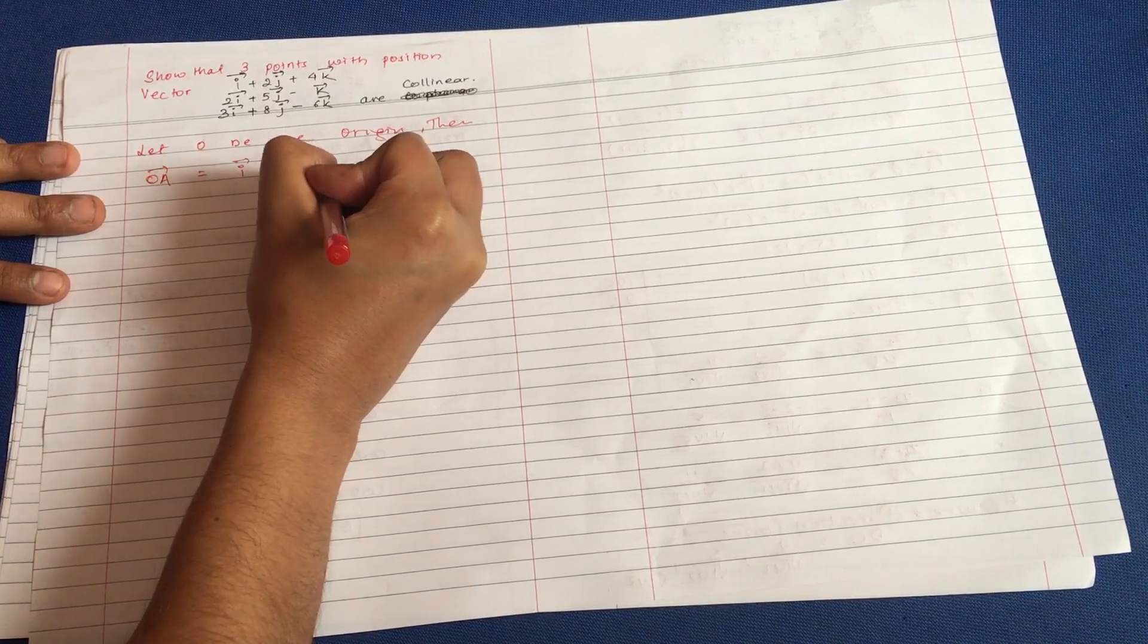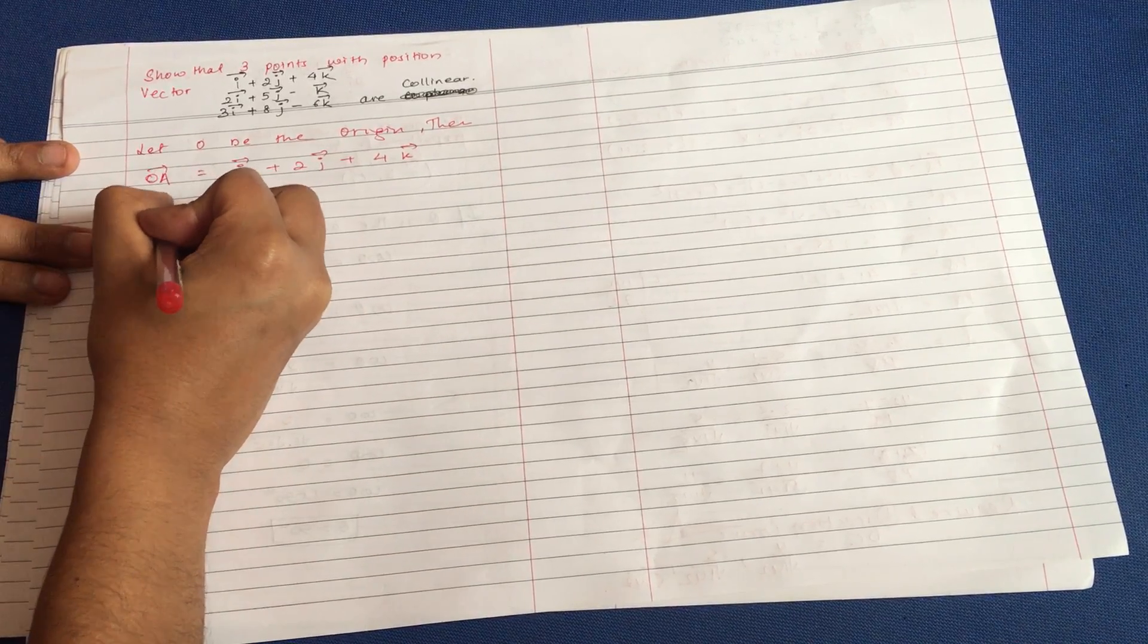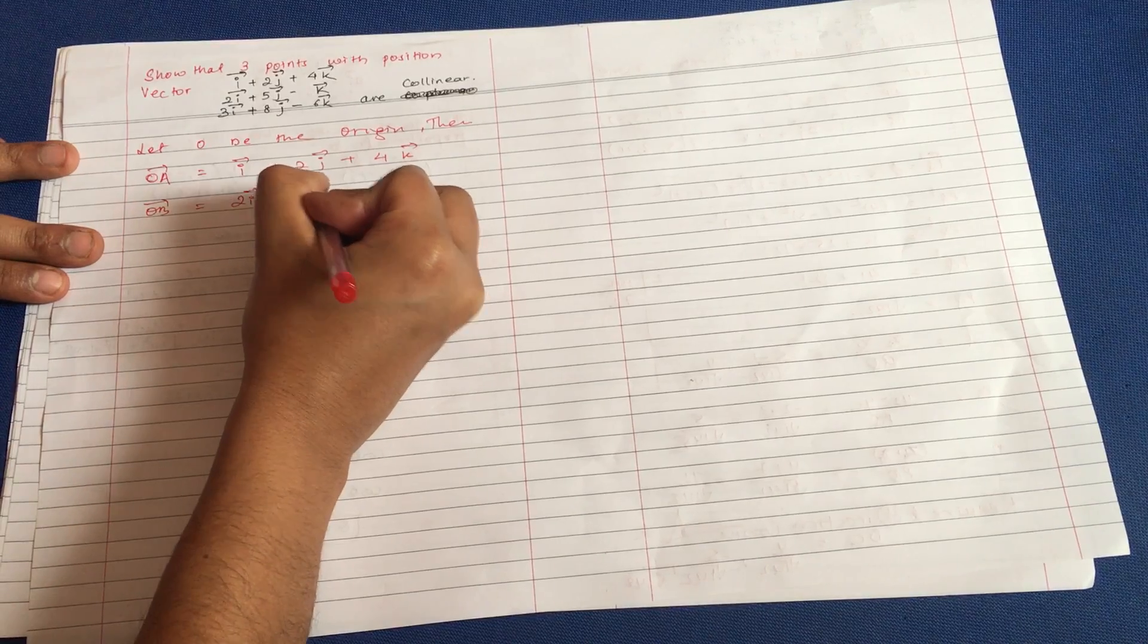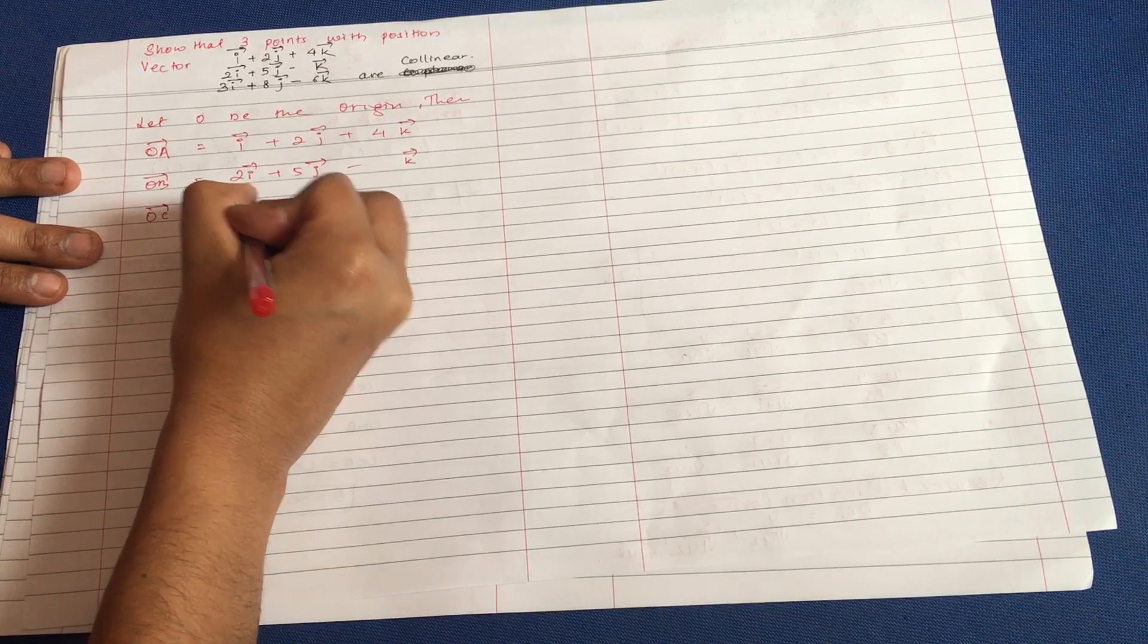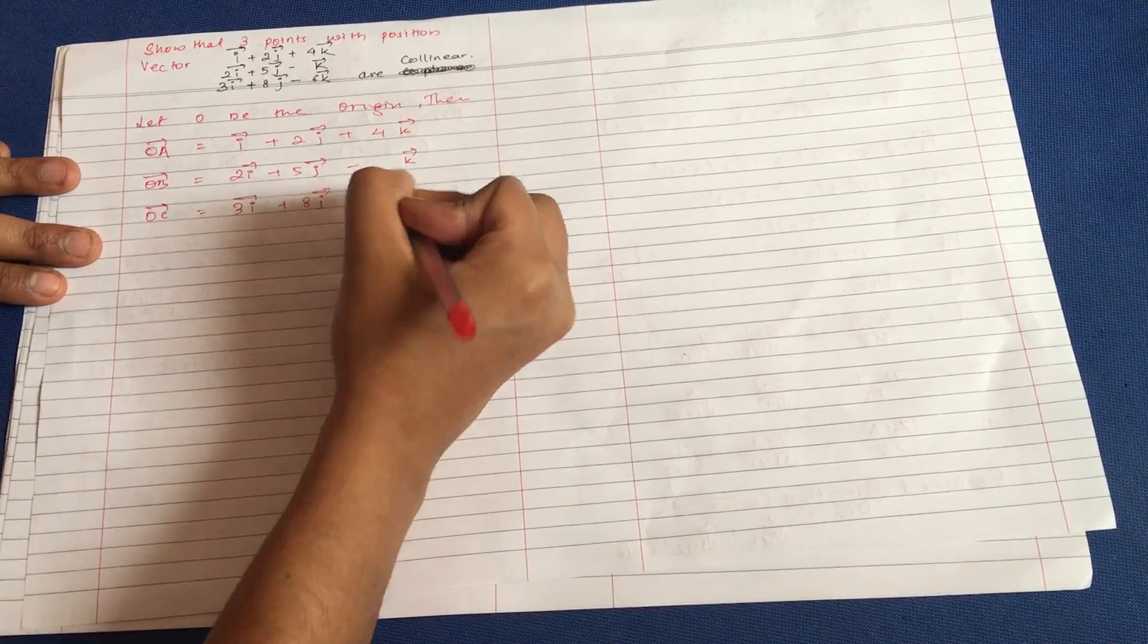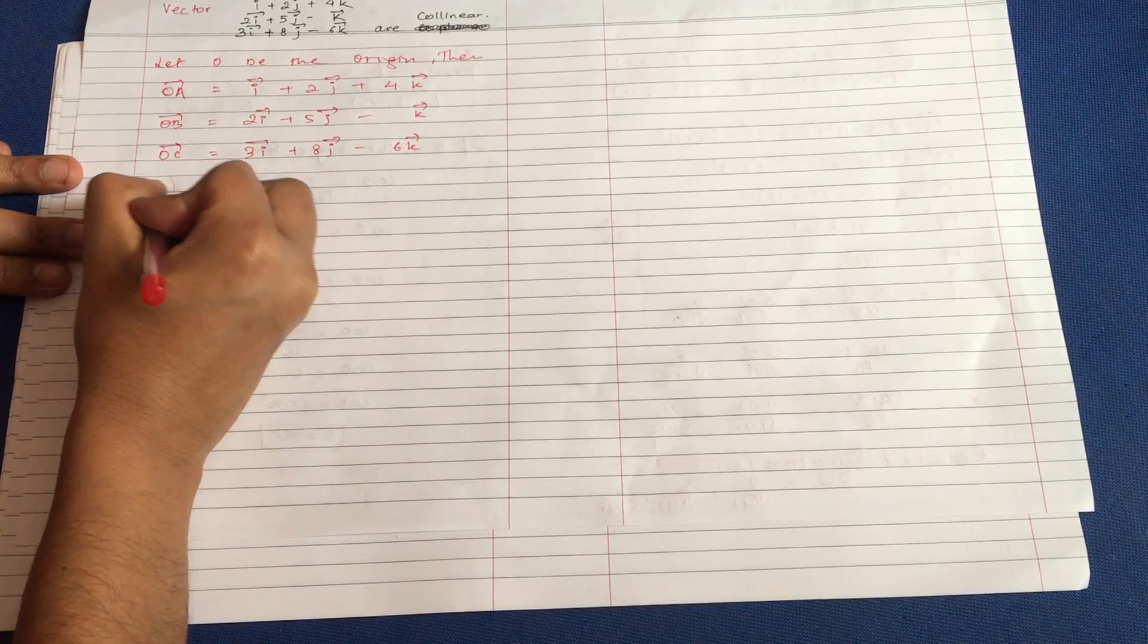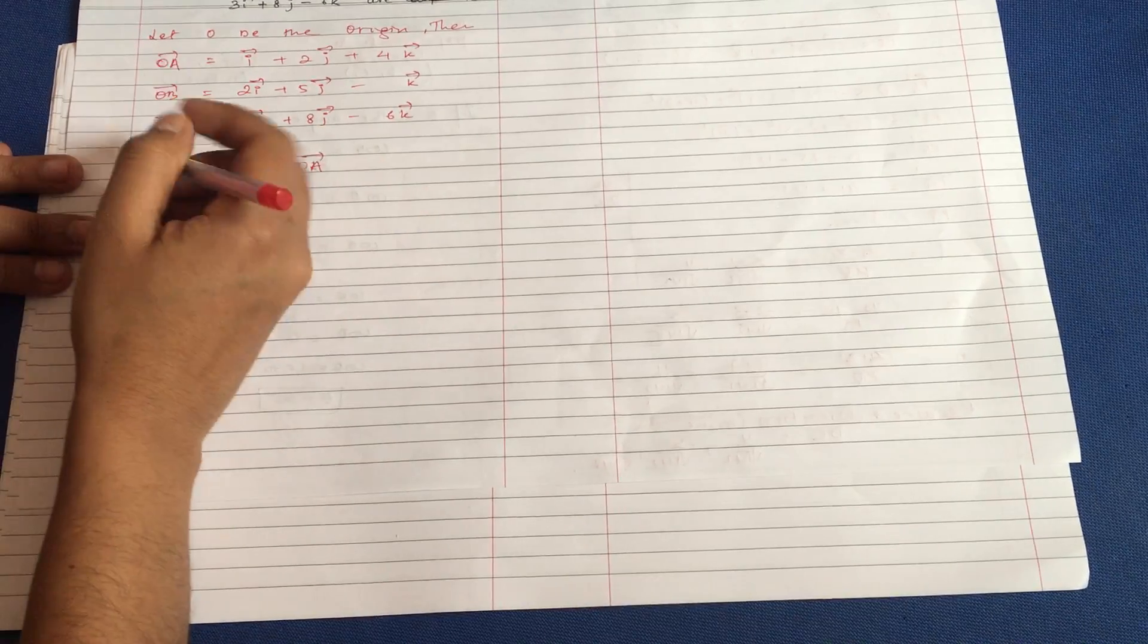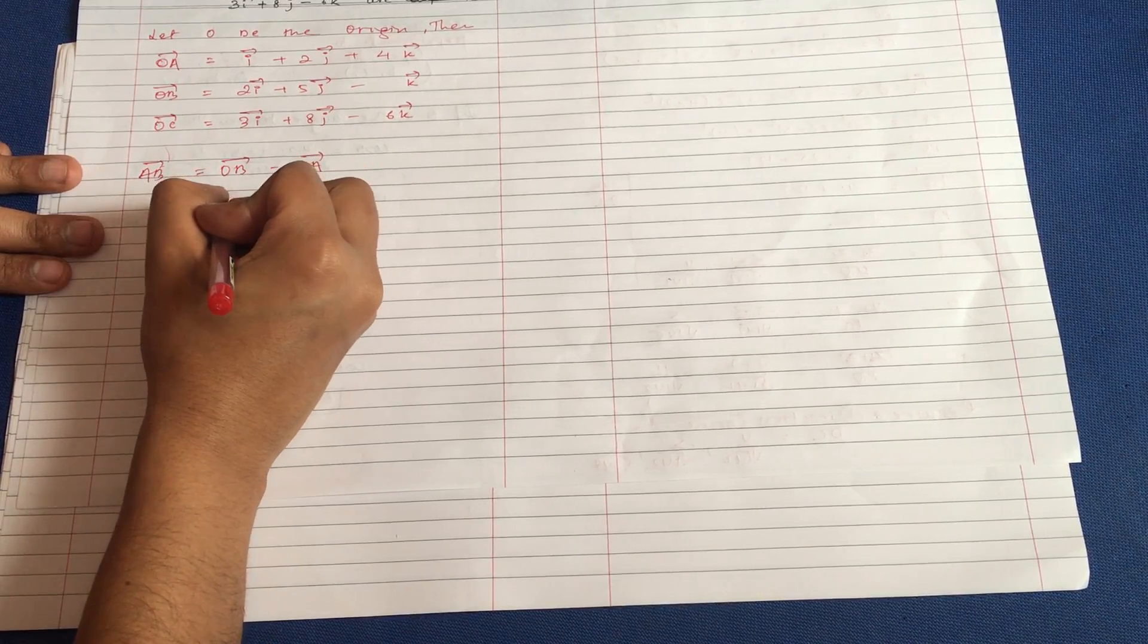Then OA = i + 2j + 4k, OB = 2i + 5j..., OC = 3i + 8j + 6k. So what we need to do is find AB. So AB equals OB minus OA. What is OB minus OA? That is simple, like 2...